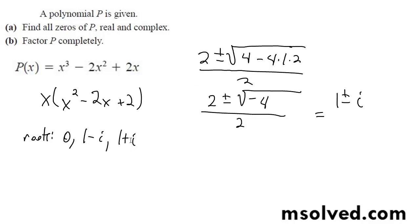And completely factored, it's going to be x times x minus 1 minus i times x minus 1 plus i. And that's it.